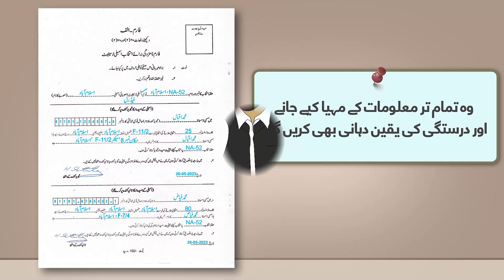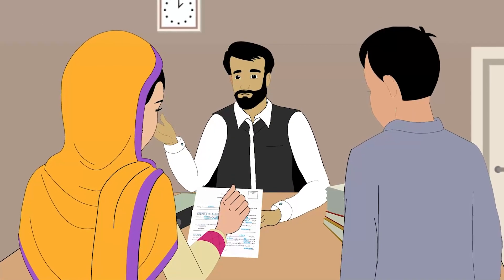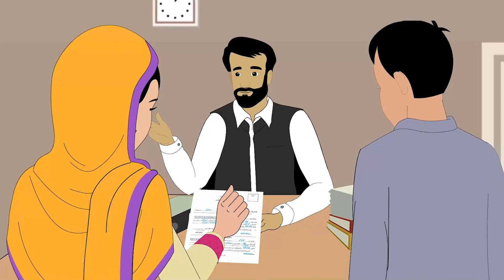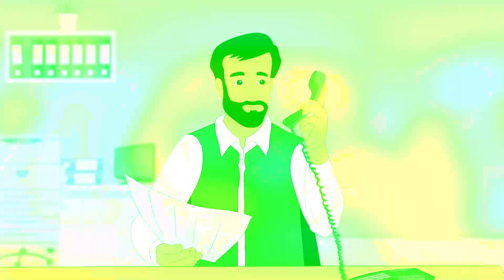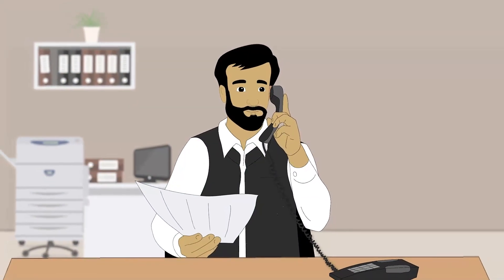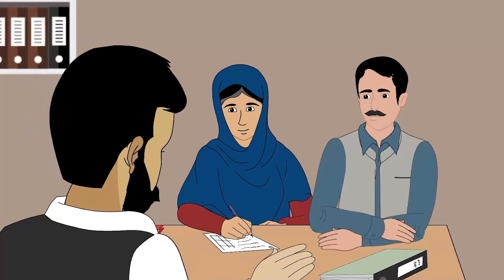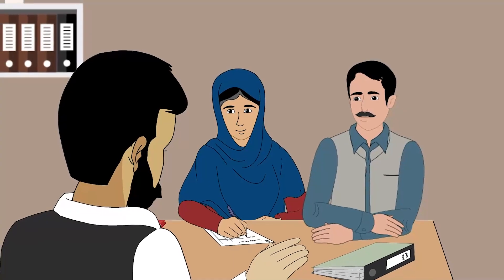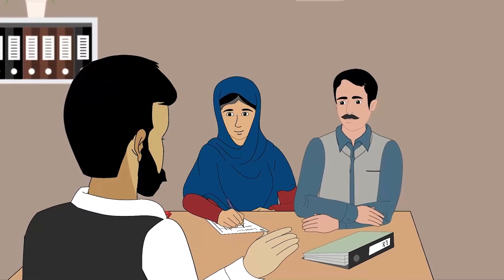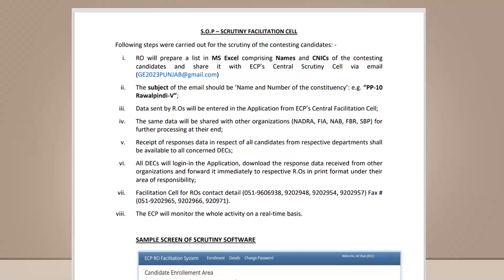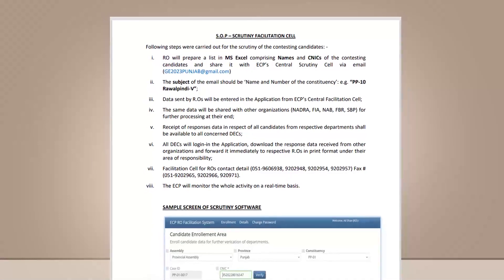They will ensure the provision of all information and ascertain their accuracy. During the scrutiny, ROs are not allowed to ask irrelevant questions or any questions that are not part of the objections raised. As part of the scrutiny, the ROs, if required, may also carry out a short inquiry. However, the ROs will provide due opportunity to correct minor mistakes in the nomination papers instead of making them a basis for rejection.